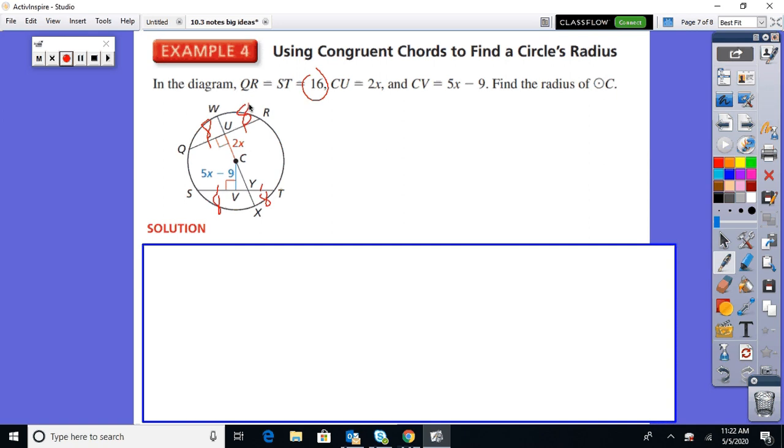So then they tell me that CU is 2x, CV is 5x minus 9. Well, check it out. If QR is equal to ST, then that means that they are the same distance away from the center of this circle. So that means that 2x has to equal 5x minus 9.